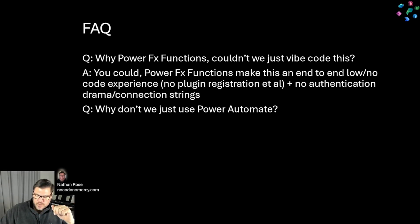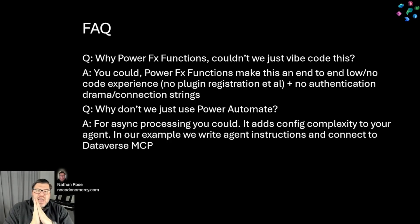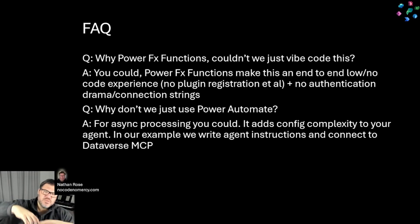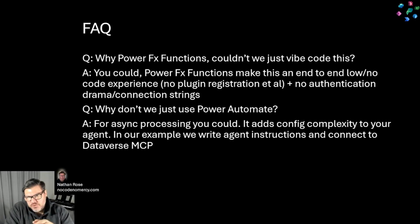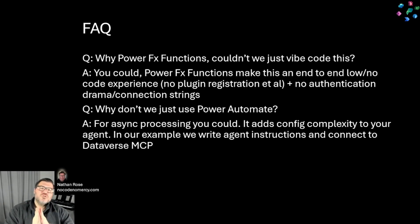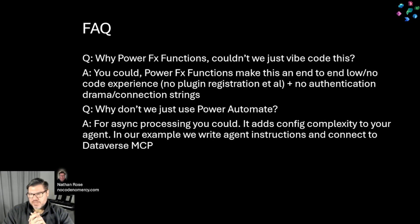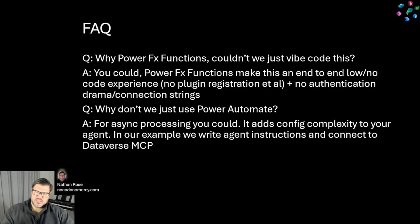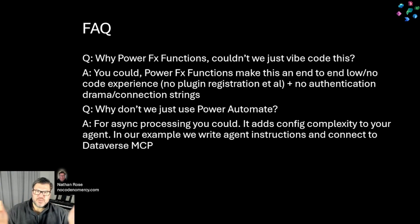Why not just use Power Automate? For async processing, Power Automate is going to be just fine. But as of today — end of July 2025 — if you were to use Dataverse MCP and Power Automate together, you'd have a bit of complexity: you'd need to add Dataverse MCP as a tool, add agent flows as tools, handle data interchange between both, and ensure your agent's instructions cover when to use each. The solution I've just walked you through eliminates all of that — you just create an agent, add instructions, connect to Dataverse MCP, and the rest is taken care of. That's why PowerFX functions create elegant ways to quickly realize value with Dataverse MCP in Copilot Studio and agentic AI scenarios.